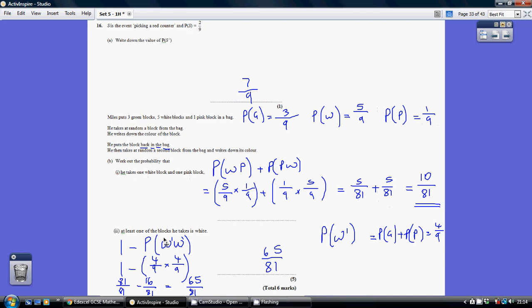Now for part 2, we want the probability of at least one of the blocks he takes is white. The probability of at least one of them being white is everything apart from the probability that your two picks are not white. I think the easiest way to do this is just to work out the probability you don't get a white and then you don't get a white secondly. The probability of a white is 5 out of 9. So the probability you don't get a white is the rest, it's 4 out of 9. In other words, the probability of a green or a pink. The probability of not a white is 3 ninths plus a ninth, which is 4 ninths.